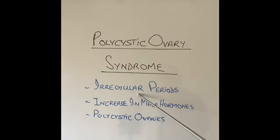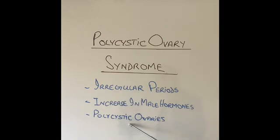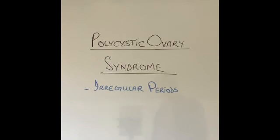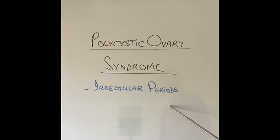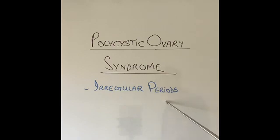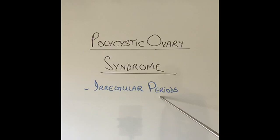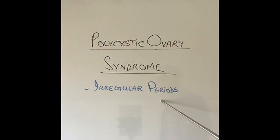The first feature is irregular periods. Women who suffer from polycystic ovary syndrome have abnormal levels of hormones in their body, and hence they get irregular periods. Either they have very scanty periods — very irregular, not happening every 28 days like a normal cycle — or they do not have periods at all. Because of these irregular periods, they do not produce an egg during every menstrual cycle, and that is the reason why they are infertile.